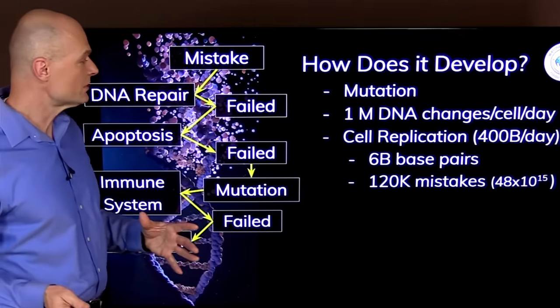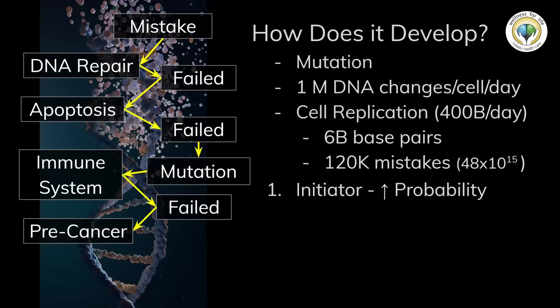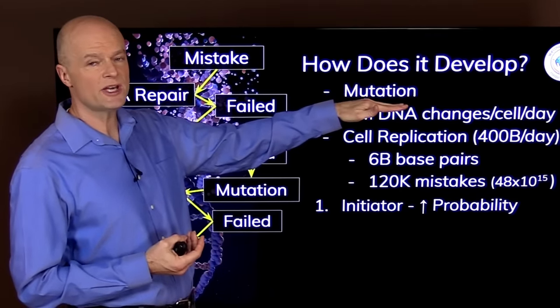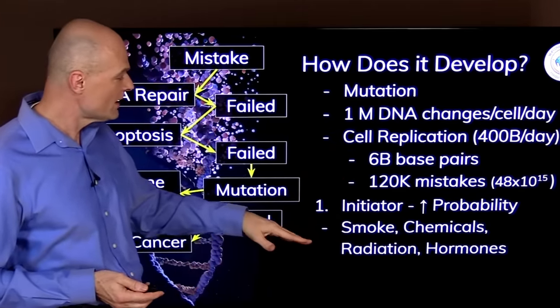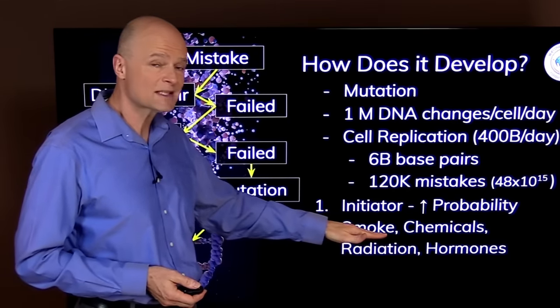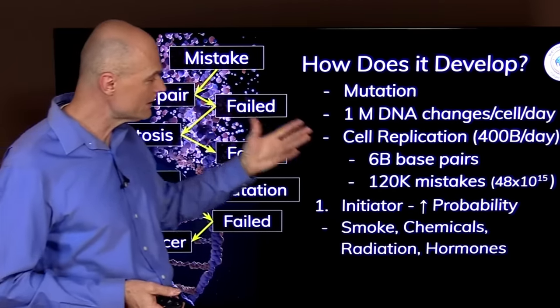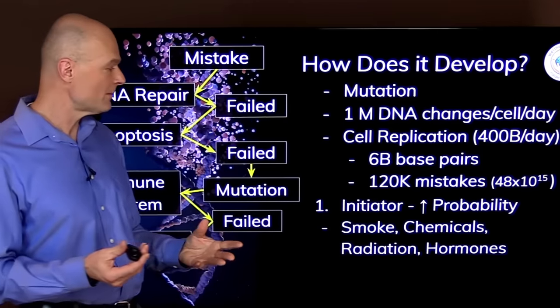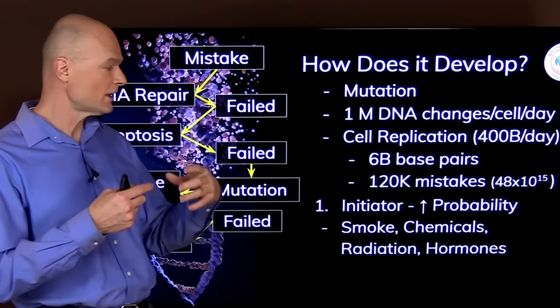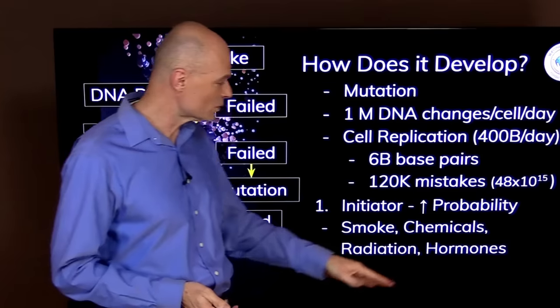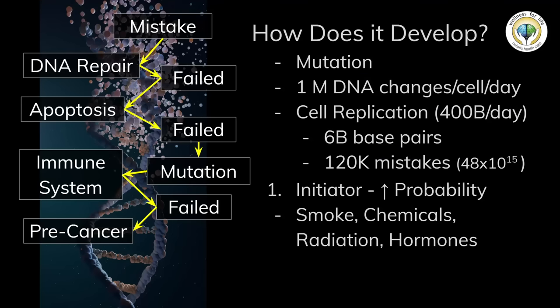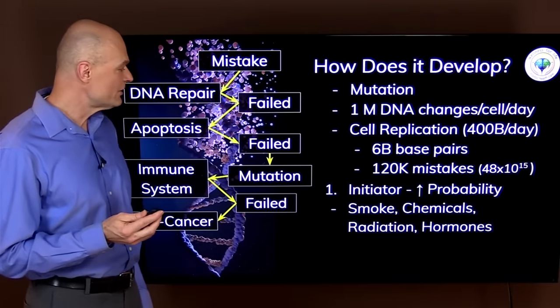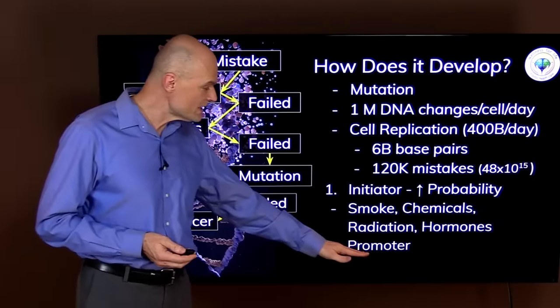In order to develop cancer we need two things. We need an initiator, something that's a stressor that increases the rate of mutation and the severity of the mutation. Those can be things like smoke in cigarette smoke, chemicals in the environment, ionizing radiation from excessive x-rays or working around radioactive materials, or it can even be hormone imbalances. But not even that is enough to develop cancer.